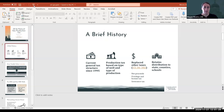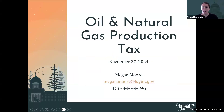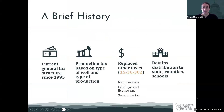I'm going to get some slides up on the screen and kick us off. These slides will be available after the presentation online, and anything underlined in orange is a hyperlink. To start with oil and gas taxation, I wanted to provide a brief history of the tax. The current general tax structure used for oil and gas production in Montana has been in place since about 1995.